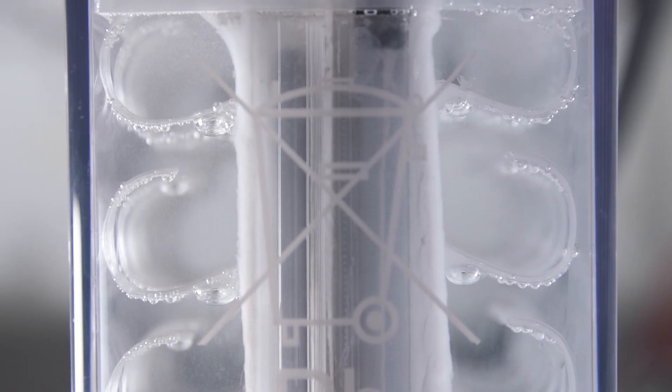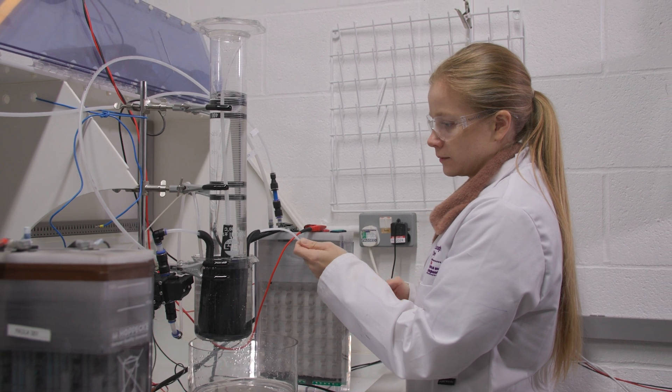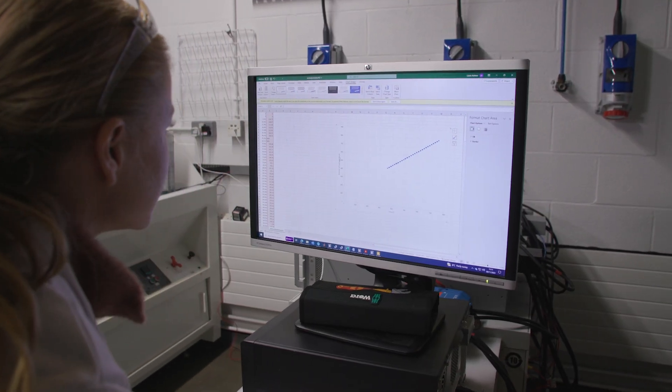So we took apart a lead acid battery, we developed it as a sort of flow battery, and we looked at whether we could produce hydrogen from it under electrolysis but also use it as a battery.